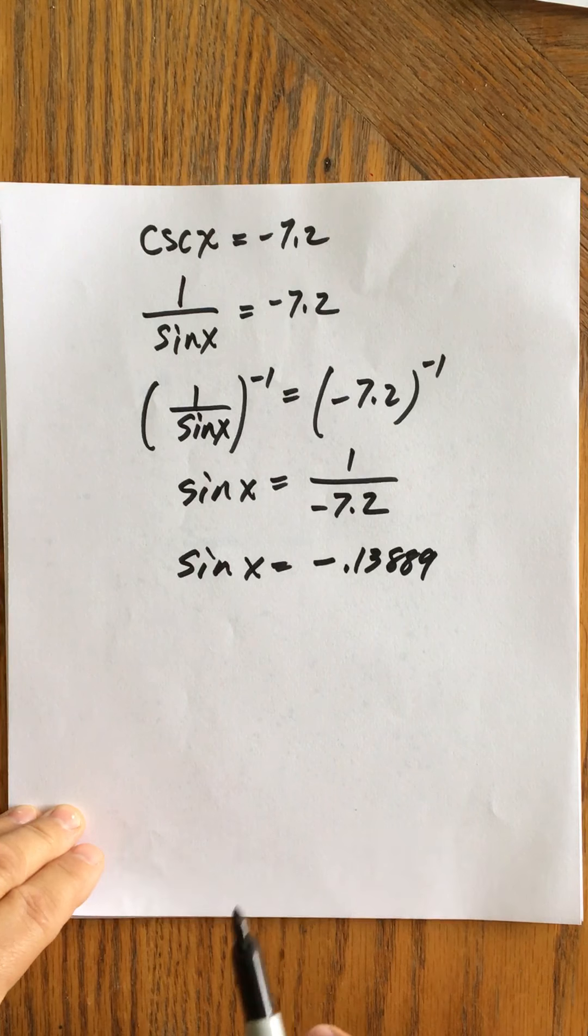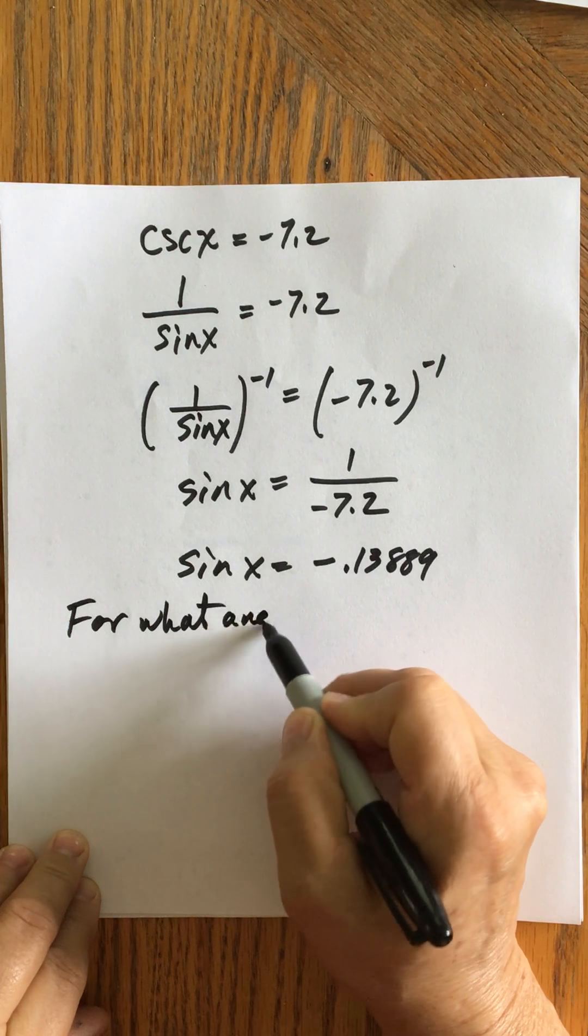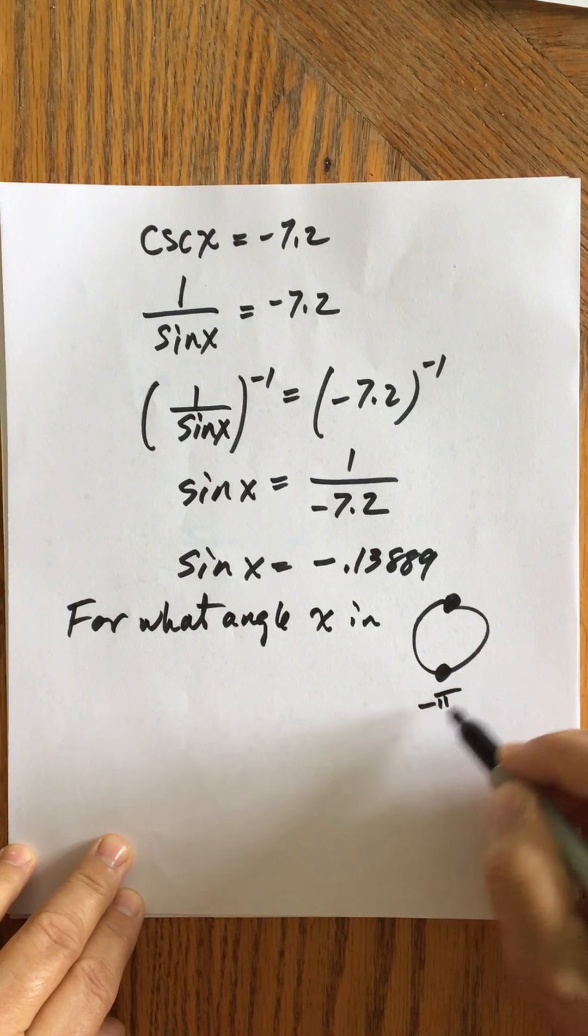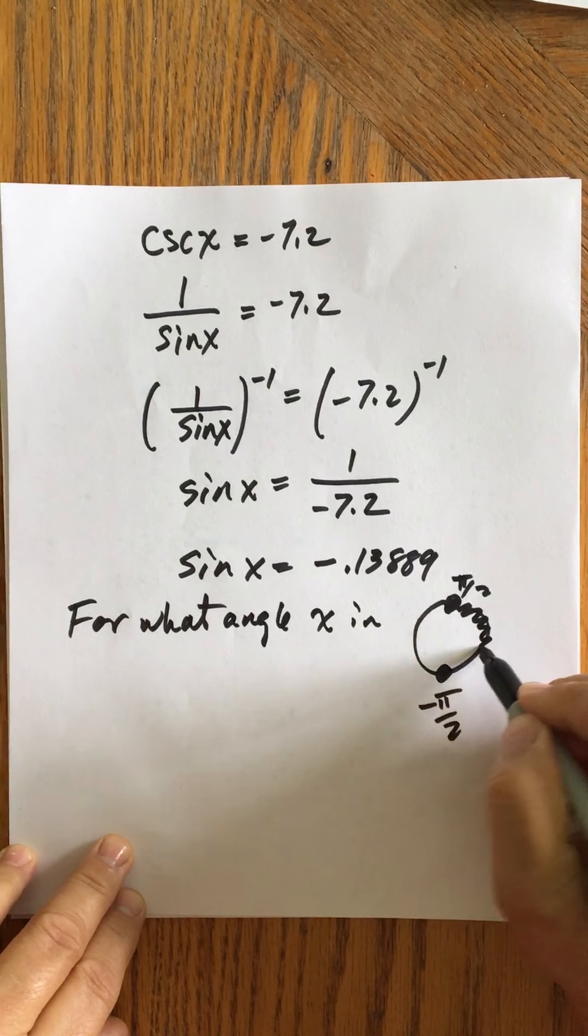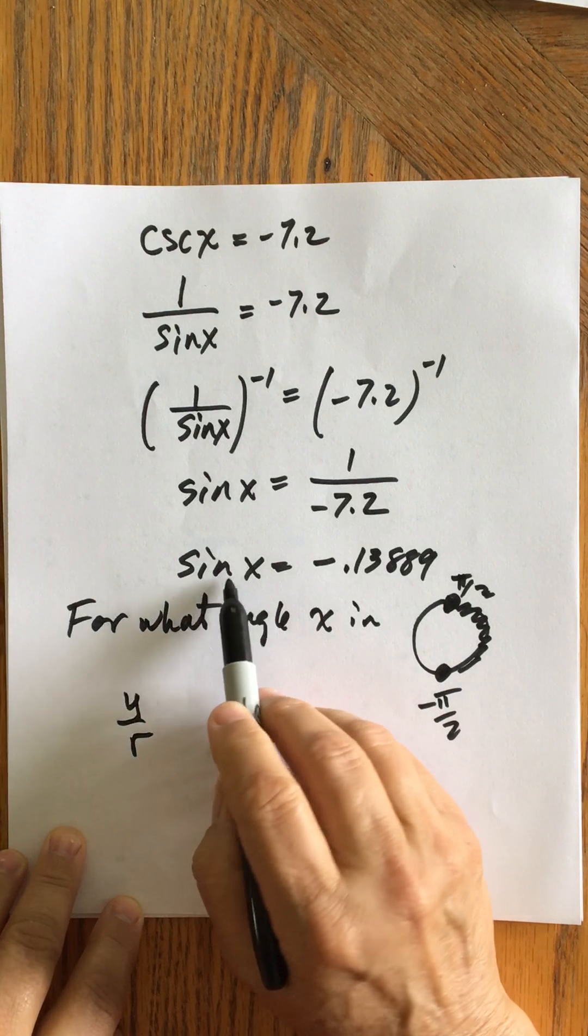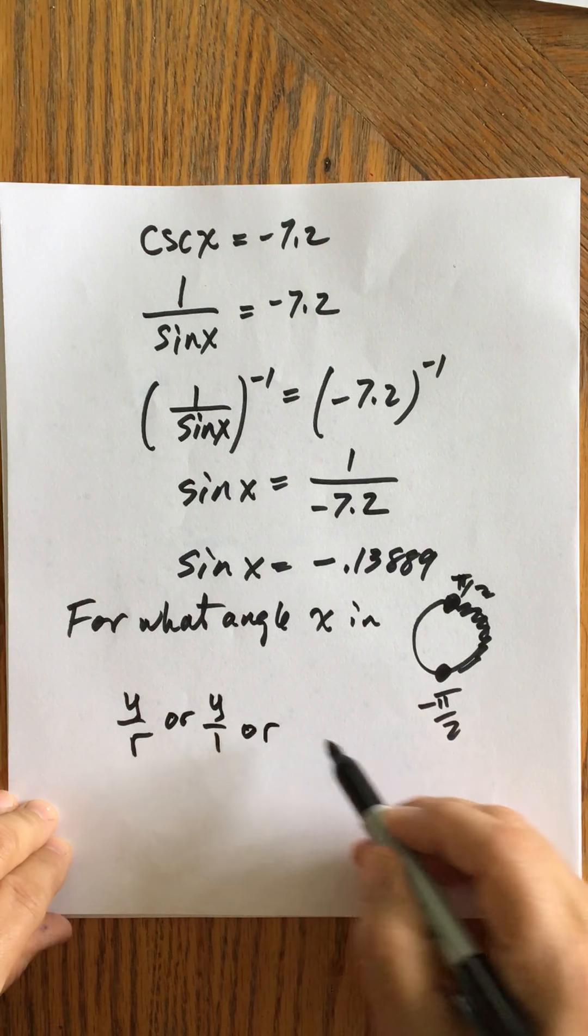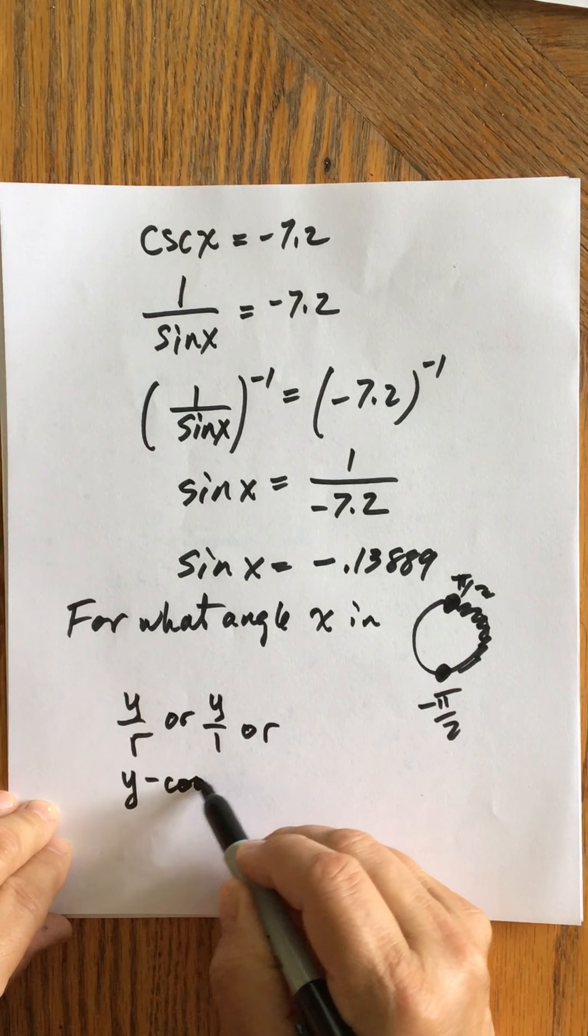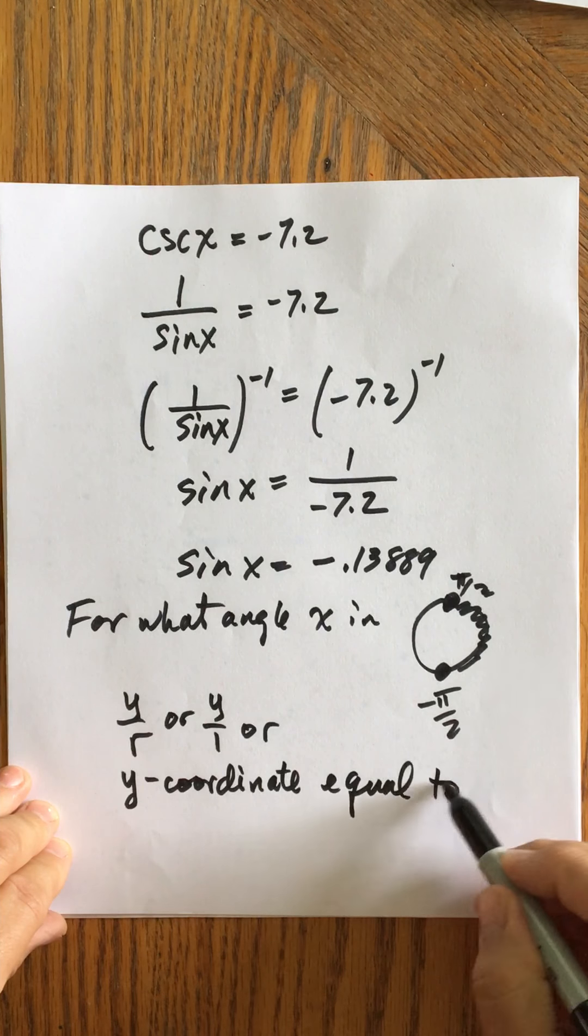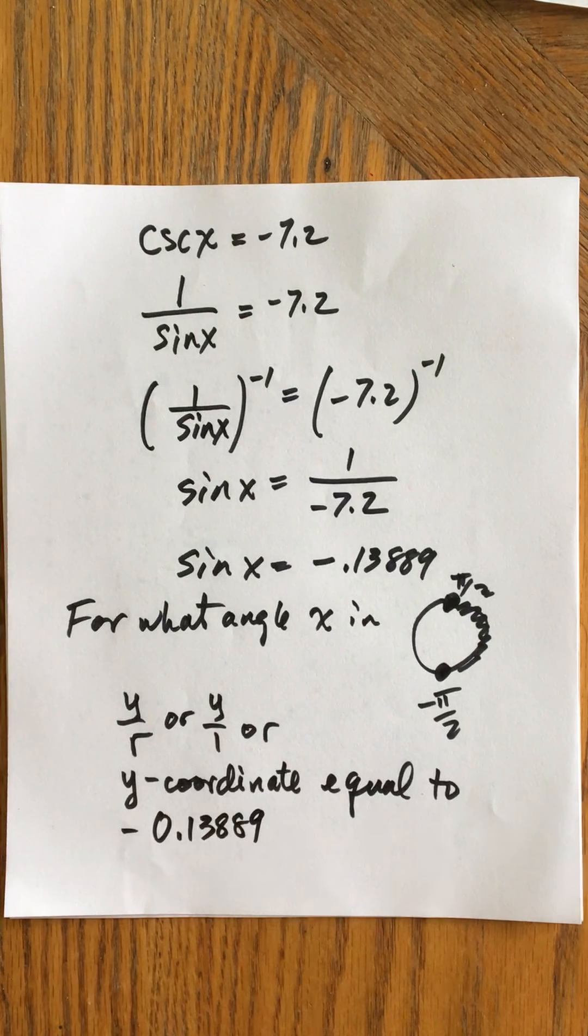All right. So now, what I'm really asking is, for what angle x? And remember, I'm only allowed to look for it from negative pi over 2 to pi over 2, anywhere in there. For what angle x is the ratio y over r? And that's because that's the definition of the sine function. But if I want to use the unit circle, that's fine. So basically, the y-coordinate equal to negative 0.13889, right?